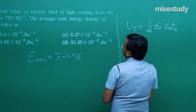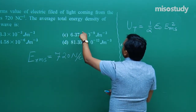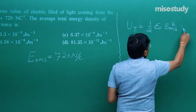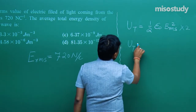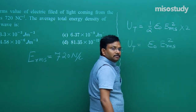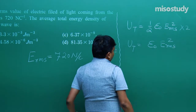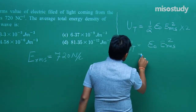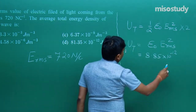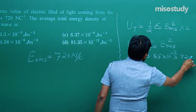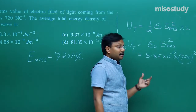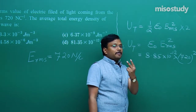The total energy density formula is U_t = ½ε₀·E_RMS². Considering reflection as well, the average total energy density is U_t = ε₀·E_RMS². Now put the values: ε₀ = 8.85×10⁻¹² and E_RMS = 720. In the beginning of this video I mentioned that two aspects are important in this chapter: concepts (just 2 or 3) and formulae.